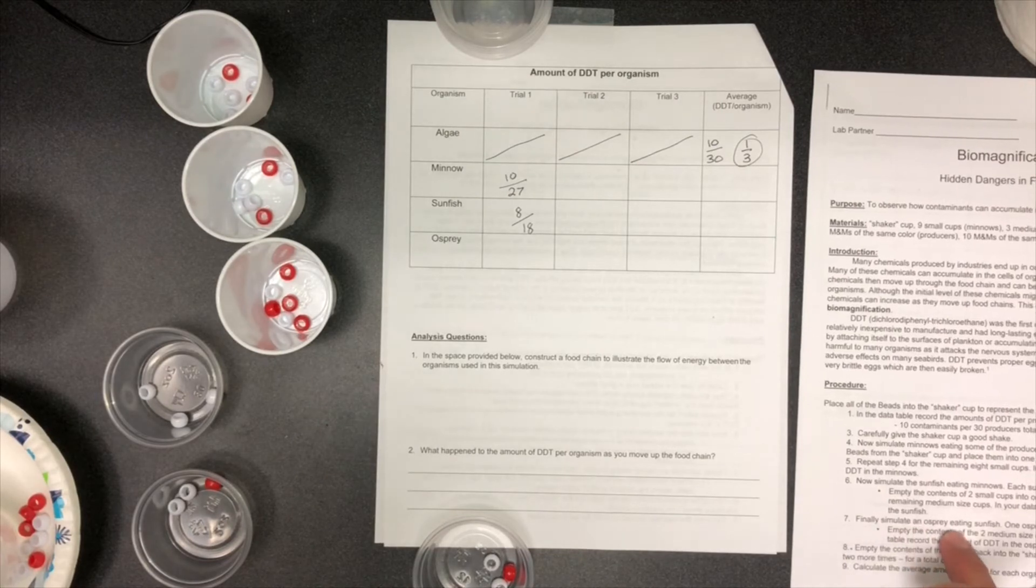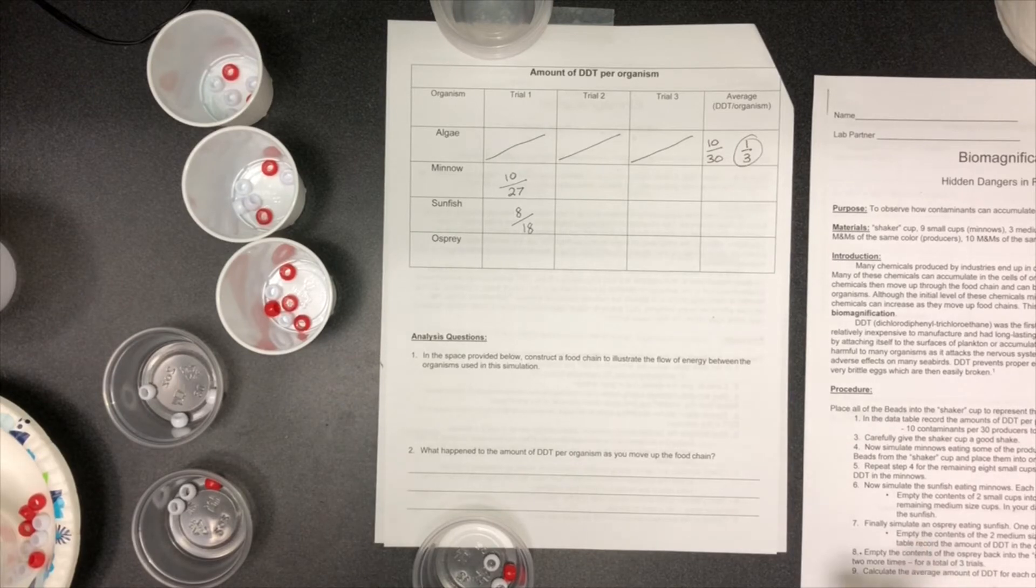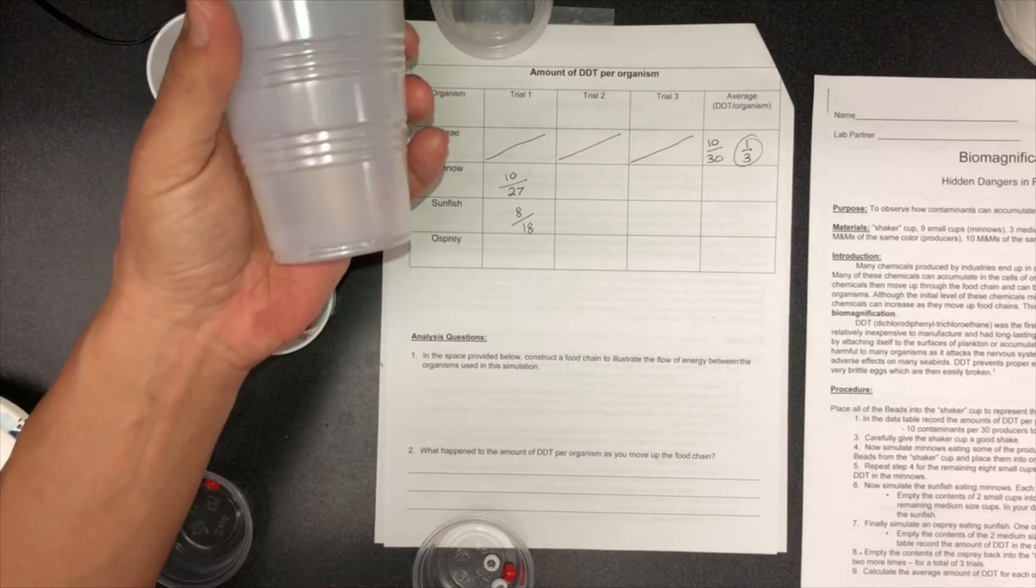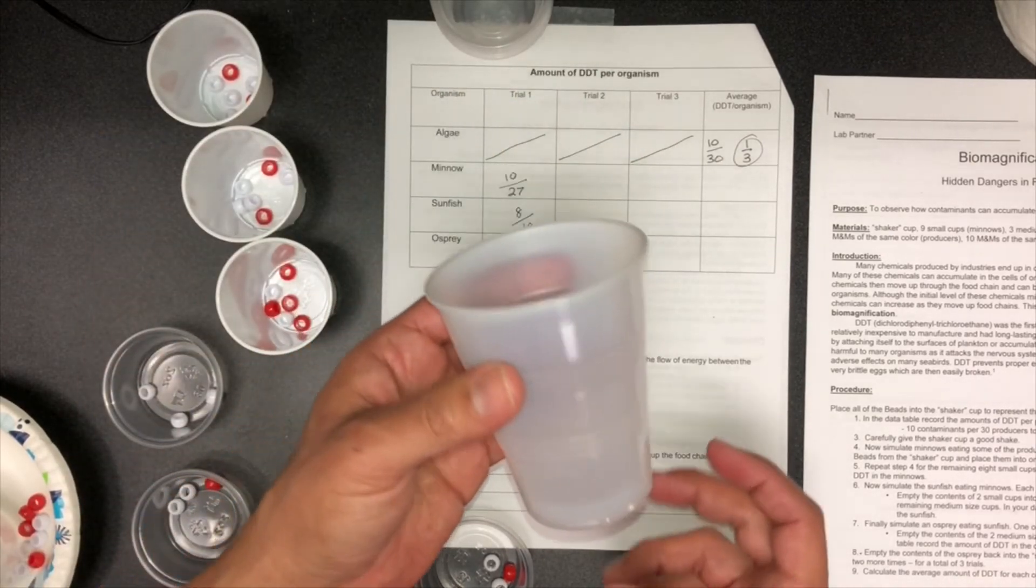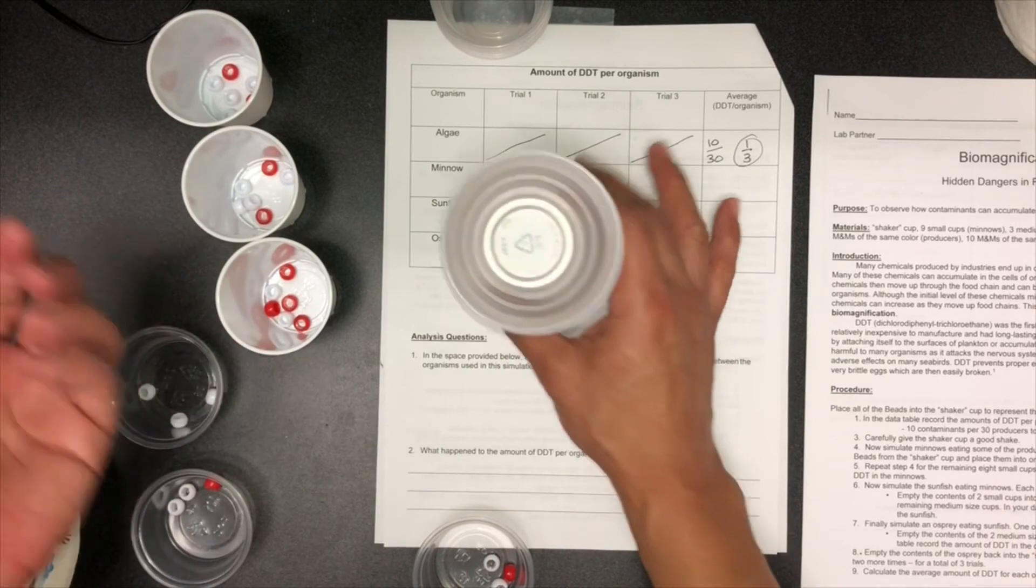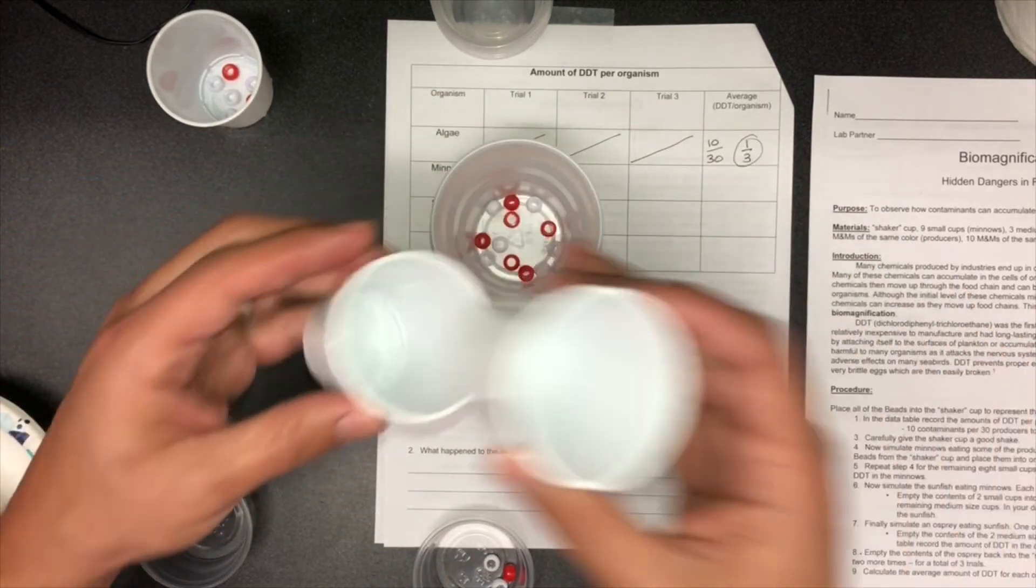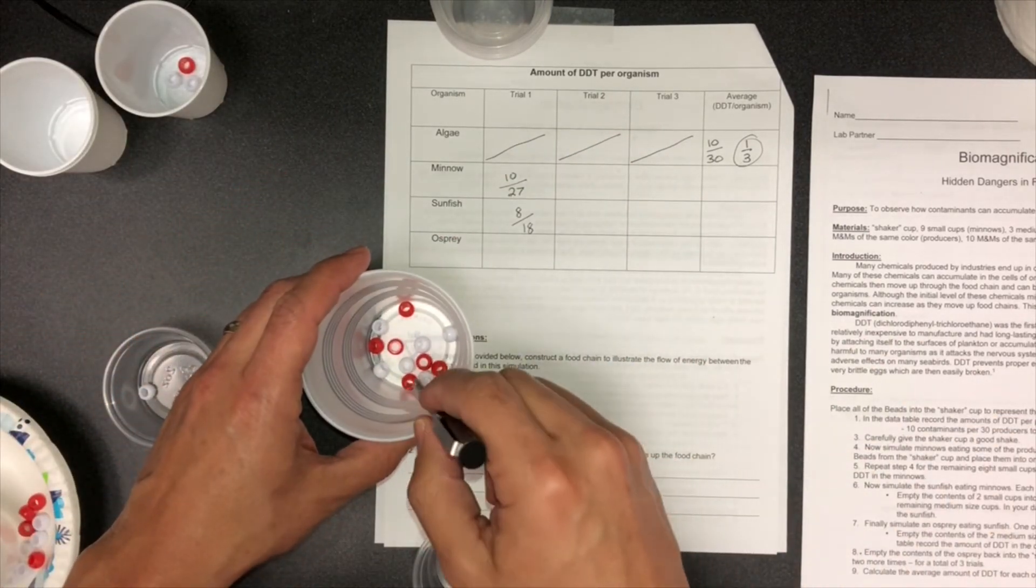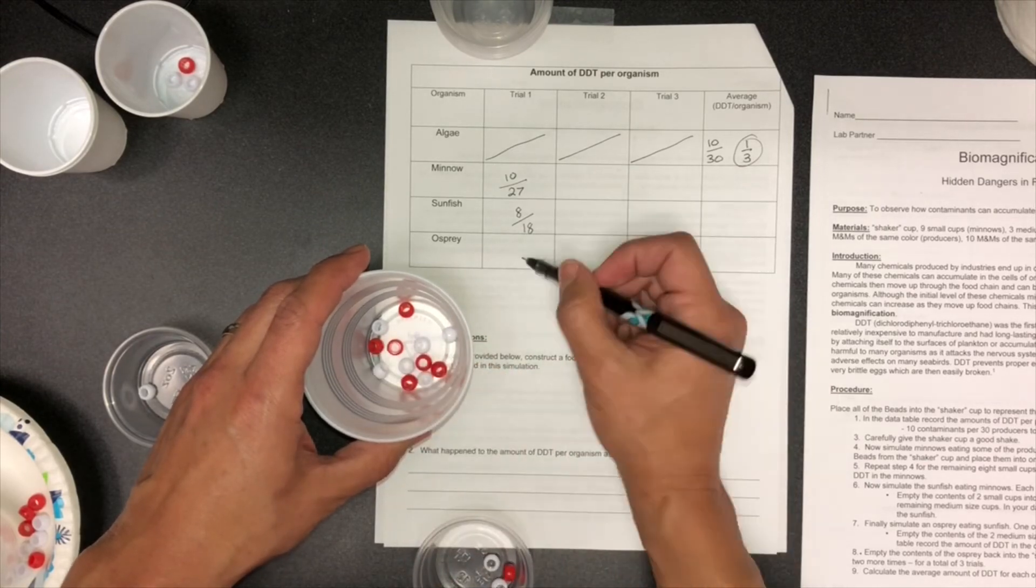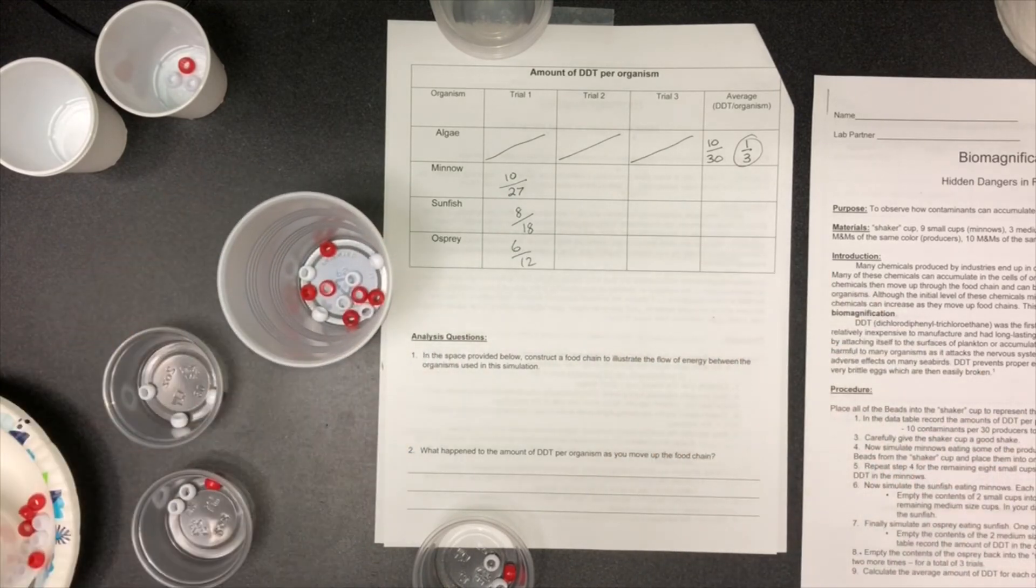Finally, simulate an osprey eating sunfish. One osprey needs to consume two sunfish. The way you do that, here's our osprey, empty the contents of the two medium-sized cups into the larger cup. In your data table, record the amount of DDT in the osprey. So whichever cup you want, he eats two of them. Now we record what's the osprey got: we have one, two, three, four, five, six, seven, eight, nine, ten, eleven, twelve beads. One, two, three, four, five, six of which are red. So it's a half, half of them are DDT.